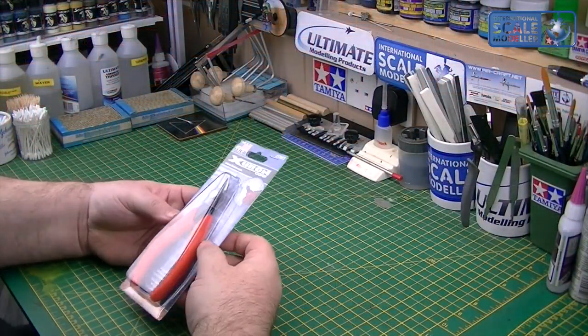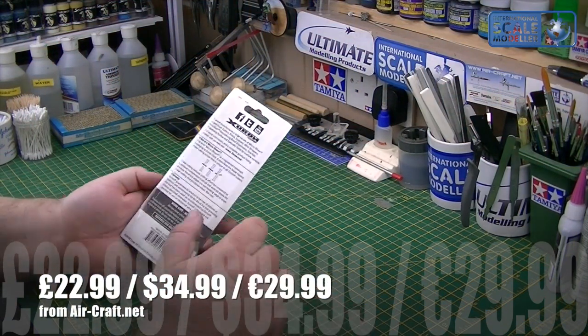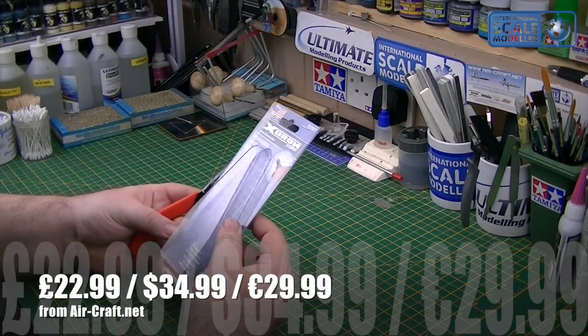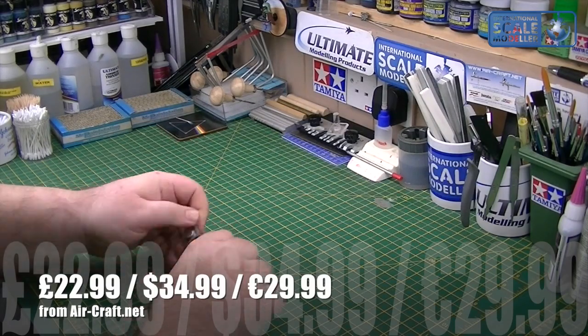Next up is the professional sprue cutters. Same information on the back, so I'm not going to go through all that again. Same protective packaging, basically the same information, just the different cutters on there. And that's it. Protective tubing on.